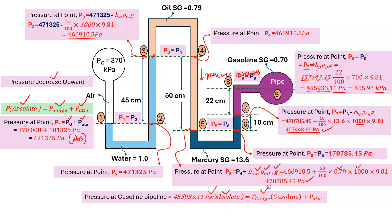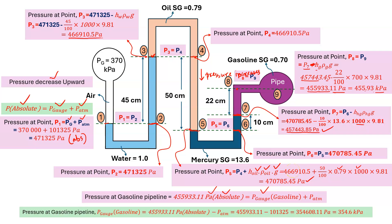Pressure at the gasoline pipeline is 455,933.11 Pascal absolute. If we want to calculate gauge pressure: P_gauge_gasoline = P_absolute − P_atmospheric = 455,933.11 − 101,325 = 354,608.11 Pascal, which is 354.6 kilopascal. So we got the pressure at the gasoline pipeline: 354.6 kilopascal.